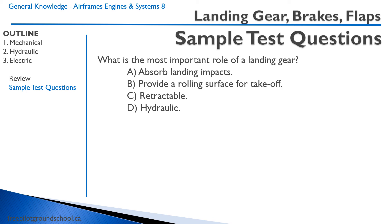B — provide a rolling surface for takeoff. The landing gear does allow the airplane to roll, but that's not its most important role. C — retractable via hydraulic. Those are methods of retracting a landing gear, but that has nothing to do with the purpose of landing gear. So the correct answer is A. That concludes this lesson on landing gear, brakes, and flaps. Thanks for joining me — we'll see you in our next lesson.